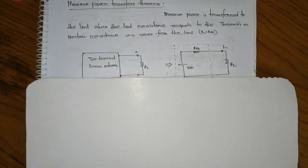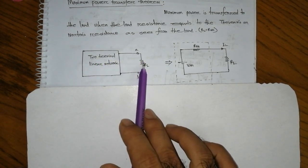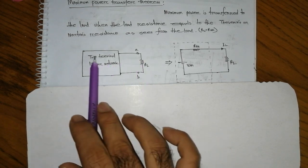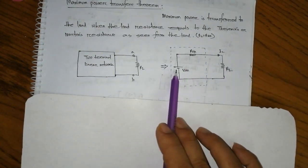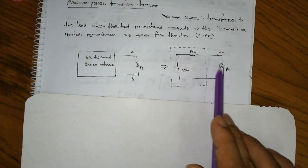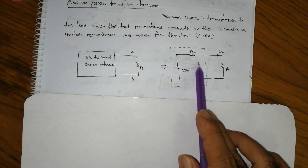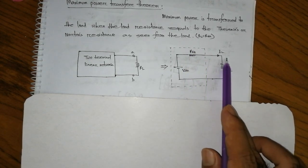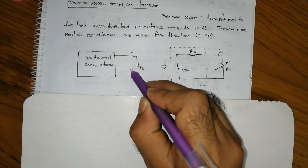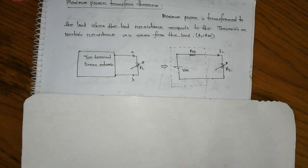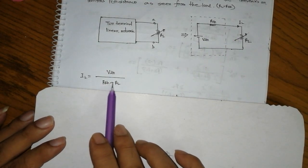From the original network, we can see that our nodes are transferred around the terminal of a linear network. This is the load, RL. This is the equivalent circuit of VTS and RTS with load RL — a simple circuit.